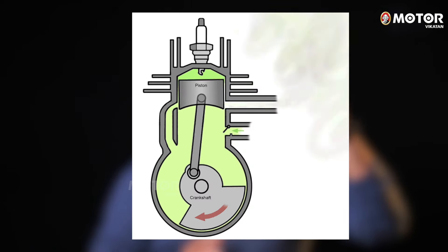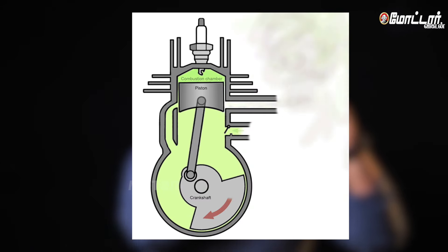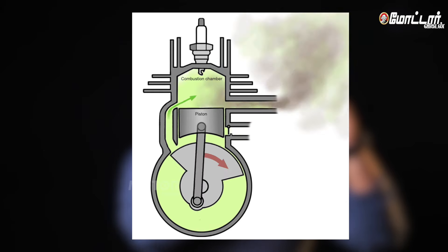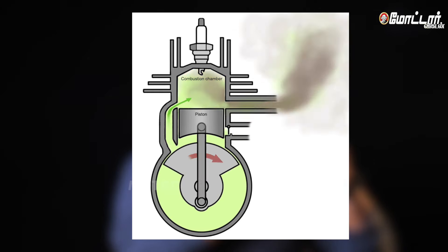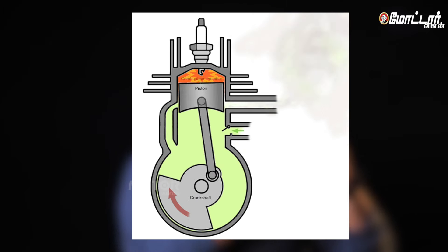If you take a 2-stroke engine, in the first stroke you compress the air and fuel mixture. In the second stroke, the compressed mixture is ignited, pushing the piston down, and the exhaust is expelled while fresh air and fuel enter.